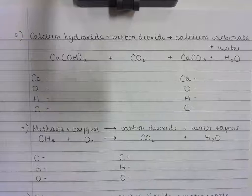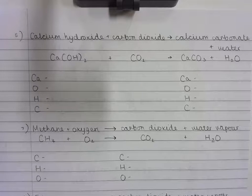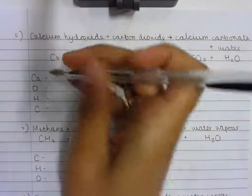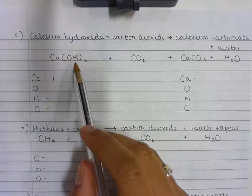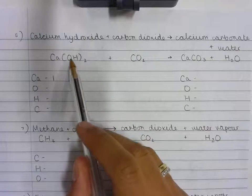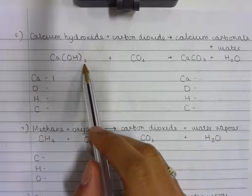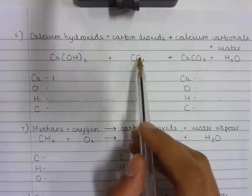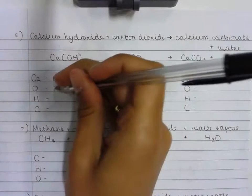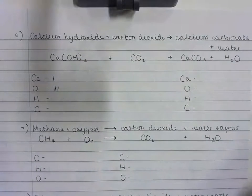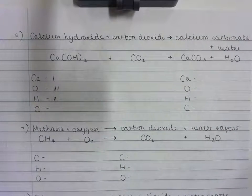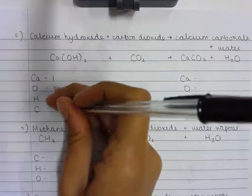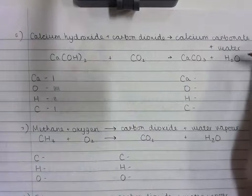Now I am going to count the number of atoms of each element that react on the reactant and product side of the equation in pen tallying. So there is one calcium atom. You might not have come across atoms inside brackets before, but if there is a number after it, you need to multiply all of the atoms inside the brackets by that number. So there are one, two, three, four oxygen atoms on the reactant side. One, two hydrogen atoms on the reactant side. And just one carbon atom on the reactant side.